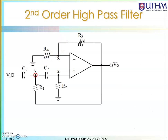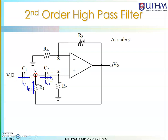Now we move on to the filter. For the filter I have two nodes, Y and Z. At node Y, I have defined a current Ic1 flowing from Vi through capacitor C1 to this node, and a current Ir1 flowing from Vo through R1 to this node. Leaving the node is another current Ic2 flowing through the second capacitor C2. So flowing in: Ic1 and Ir1; flowing out: Ic2. Therefore: Ic1 plus Ir1 equals Ic2.